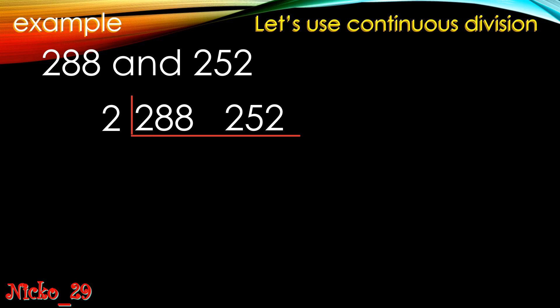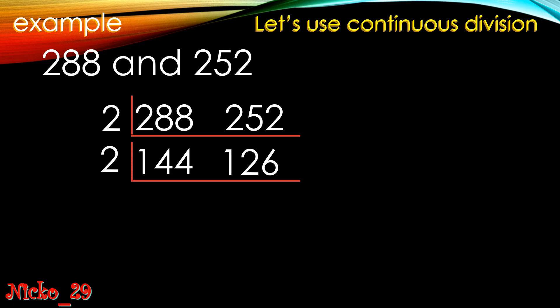Let's start with 2 since both 288 and 252 are even, so they are both divisible by 2. When we divide 288 by 2, the answer is 144, and 252 divided by 2 is 126. Since 144 and 126 are still divisible by 2, from the idea of continuous division — as long as the quotient can still be divided — we divide again. 144 divided by 2 is 72, and 126 divided by 2 is 63.